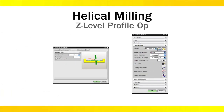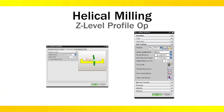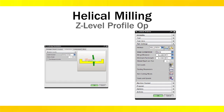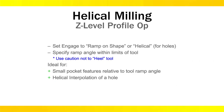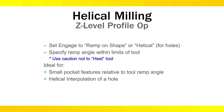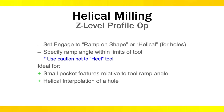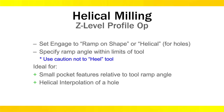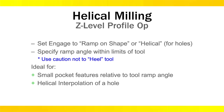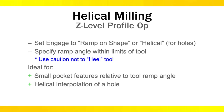Use the Z-level profile op for elongated pockets and features with sloped walls. Set the cutting parameter setting in the connections tab ramp on part to create a ramp approach and designated angle between cut levels. This is ideal for elongated pockets in which having the tool continuously ramp would mean that the depth of cut per revolution would be too low to be practical.